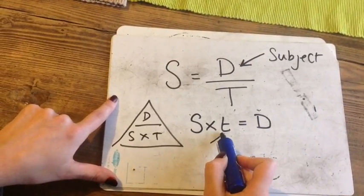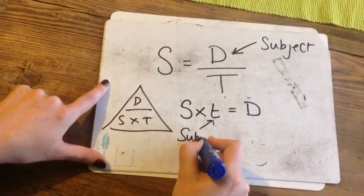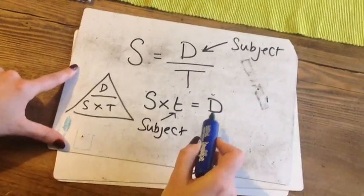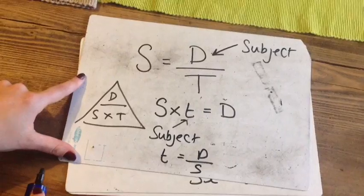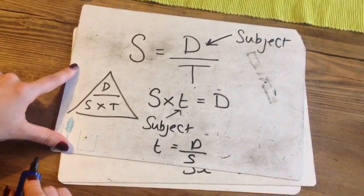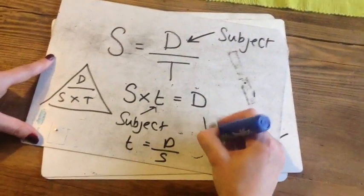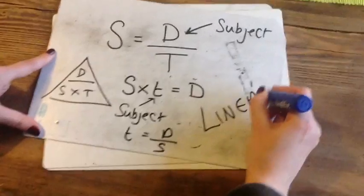If I then wanted to find time, I could make that the subject. So time equals distance divided by speed. Speed distance time only comes up on the linear exam.